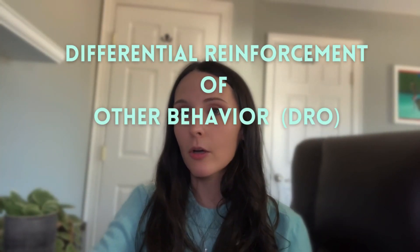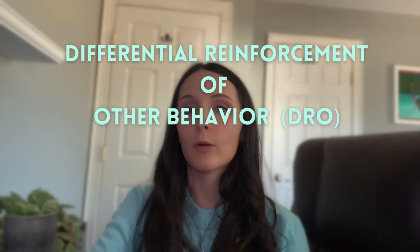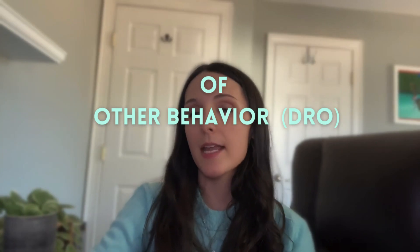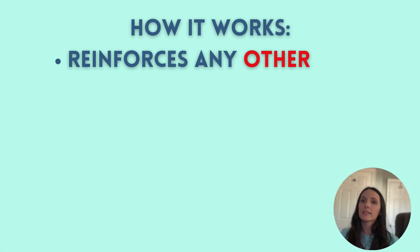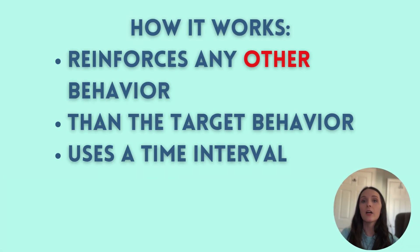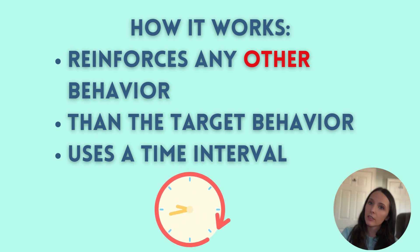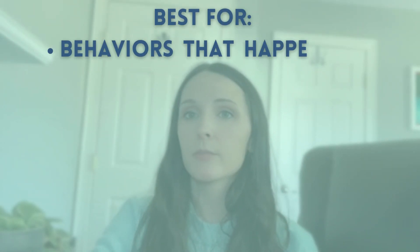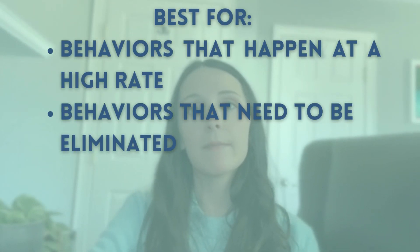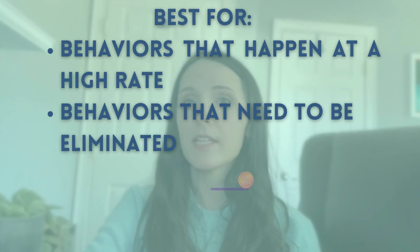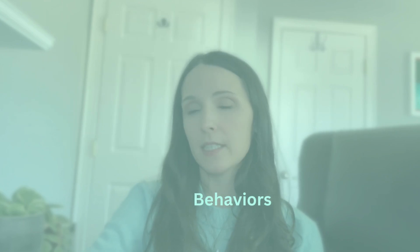First, we're going to talk about DRO, which stands for Differential Reinforcement of Other Behavior. How it works is DRO reinforces any other behavior than the problem behavior within a specific time frame. If the problem behavior does not occur, reinforcement is given. If it does occur, the timer resets. This is a really good procedure to use for a behavior that happens at a really high rate or a behavior that needs to be reduced or eliminated.